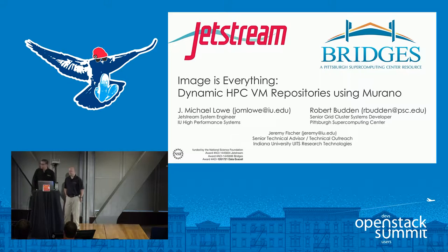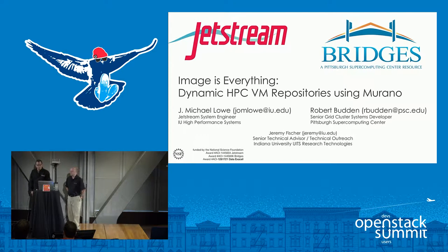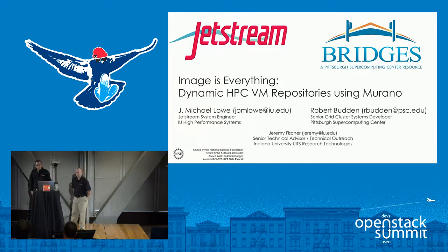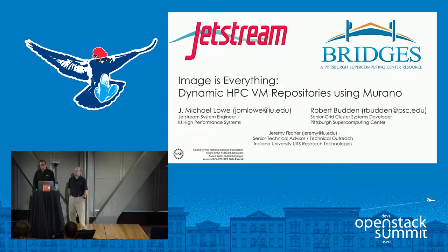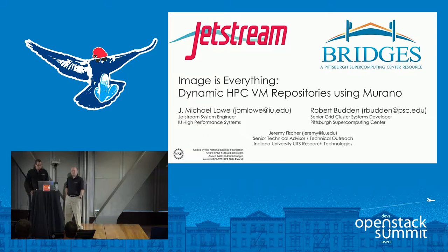Thanks for coming to our talk: 'Images Everything - About Dynamic HPC Repositories Using Murano.' I'm Robert Budden from the Pittsburgh Supercomputing Center. Bridges is an HPC resource of about 900 nodes. We boot everything using OpenStack Ironic to provision resources, blast out things to disk, and set up Slurm on top for traditional batch jobs and other things like Hadoop. We also use OpenStack for virtual machines for doing some gateways.